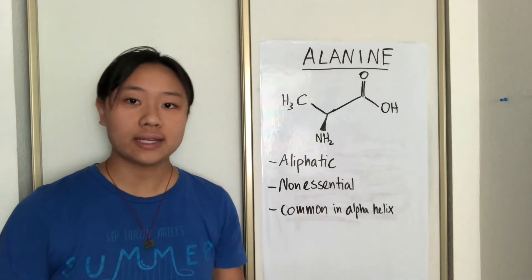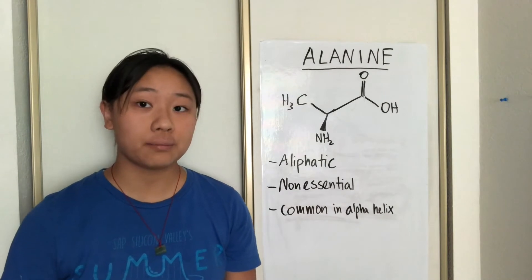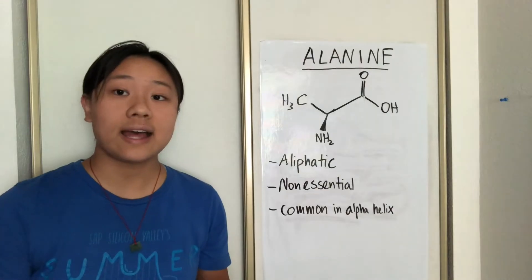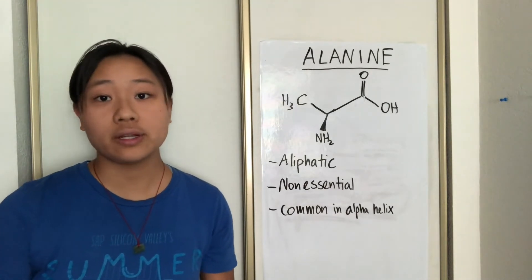Alanine can be synthesized in our body, meaning it's a non-essential amino acid, and it's common in alpha helices, unlike glycine and proline. The particular entropy property, or something like that on google, states that alanine has an entropy property that is favorable for it to be included in alpha helices.